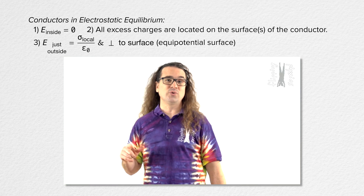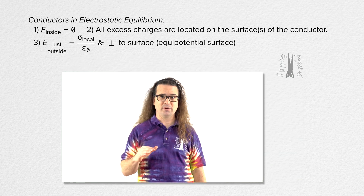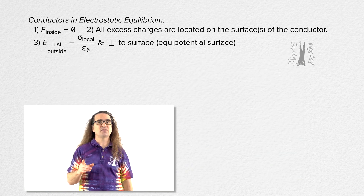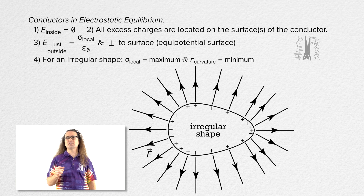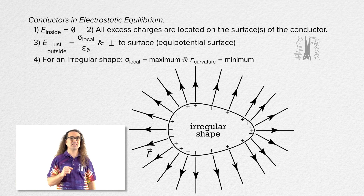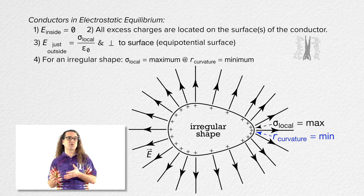The last of the four things you need to remember about conductors in electrostatic equilibrium is that for an irregular shape, the local surface charge density is at its maximum where the radius of curvature is at its minimum. In other words, the largest number of excess charges per area will be where the radius of curvature is the smallest.